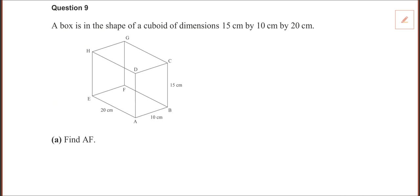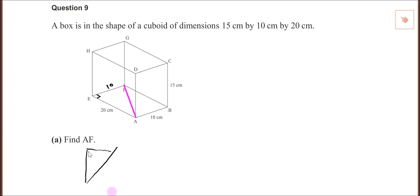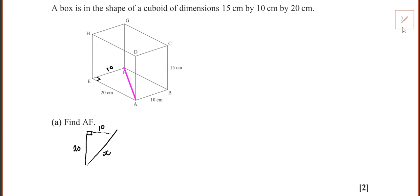So a box — find A to F. A to F means you are finding this diagonal distance. This is just 3D geometry. In this case we've got a right-angle triangle on the bottom with dimensions 10 and 20. There's no angle involved, so you're going to use Pythagoras' theorem: a squared plus b squared equals c squared. That's 10 squared plus 20 squared equals x squared.